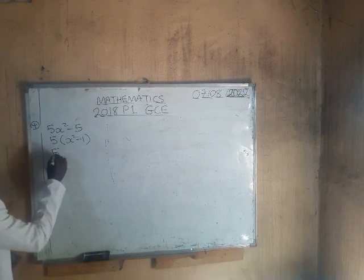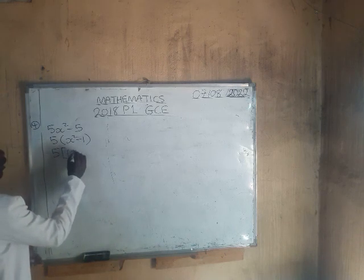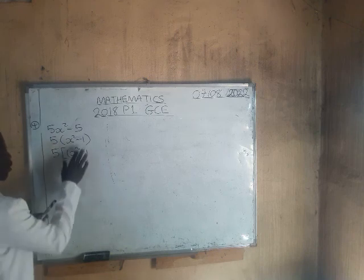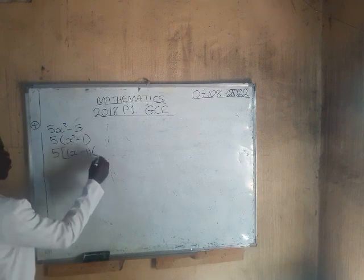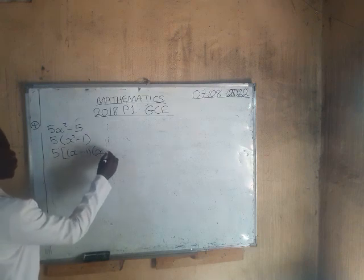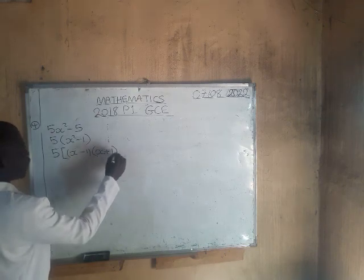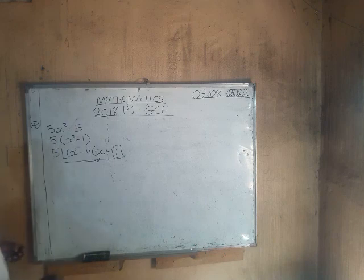Applying the difference of two squares, the final fully factorized form is 5(x minus 1)(x plus 1). This is how you factorize the expression completely.